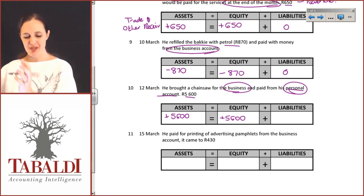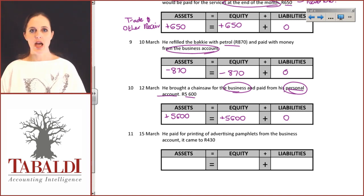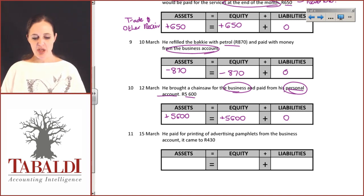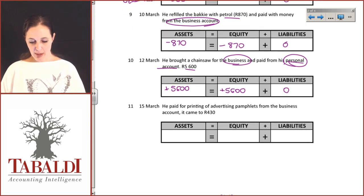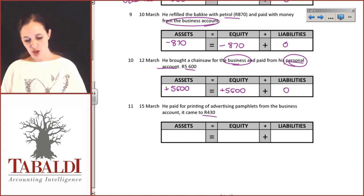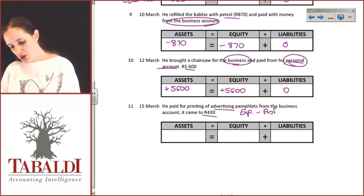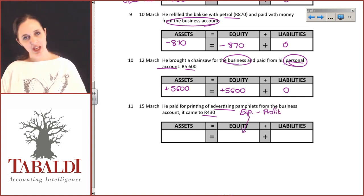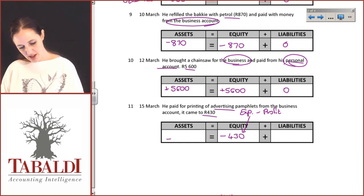Whether he invests money in the business or invests value in the form of assets, it has the same impact — the owner's share in the business has increased. There is no liability; he has not done this on a loan basis where the business must pay him back. This is part of capital. He paid for printing of advertising pamphlets from the business — 430 Rand. Advertising is an expense, so equity has gone down by 430 and the bank account has gone down by 430 as well.